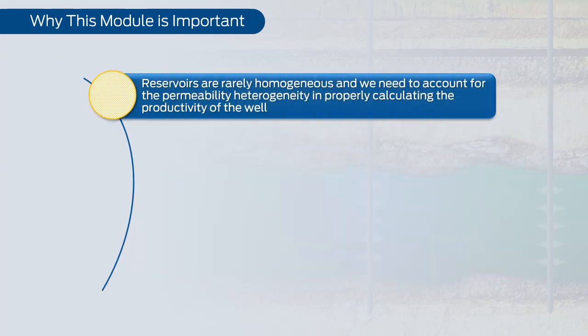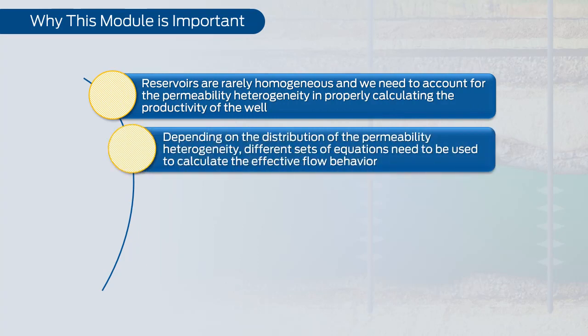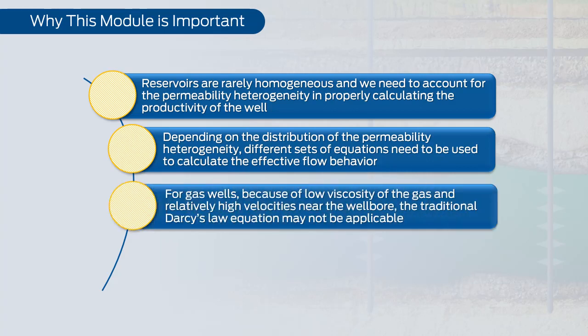Reservoirs are rarely homogeneous, and we need to account for permeability heterogeneity in properly calculating the productivity of the well. Depending on the distribution of the permeability heterogeneity, different sets of equations need to be used to calculate the effective flow behavior.